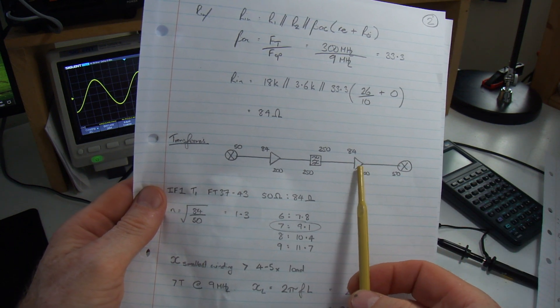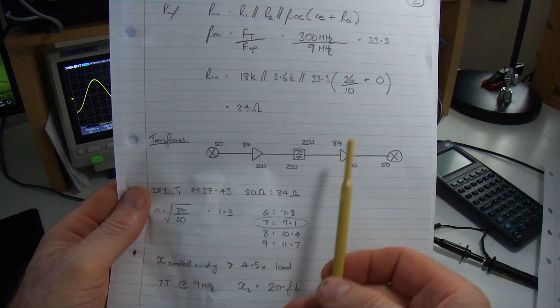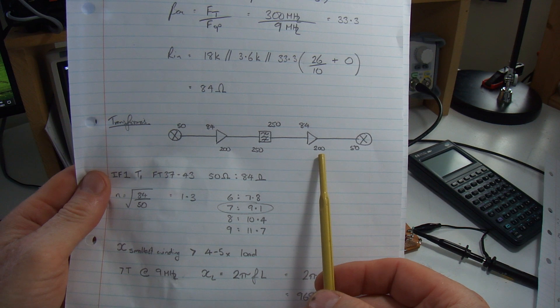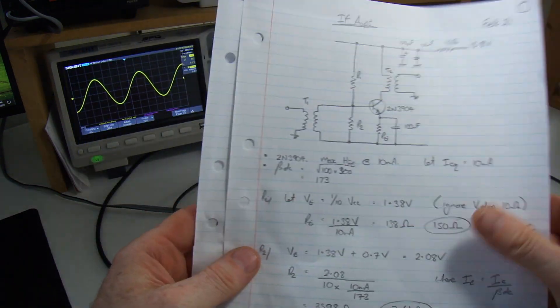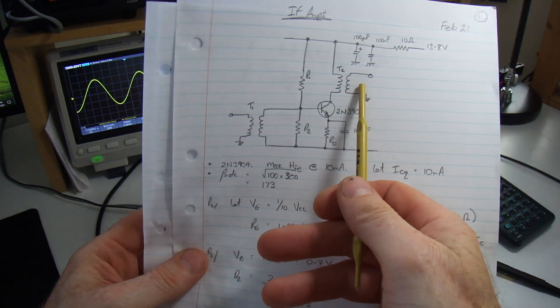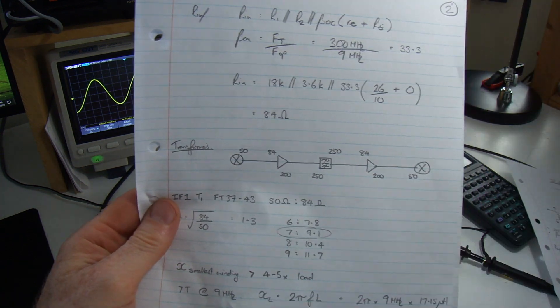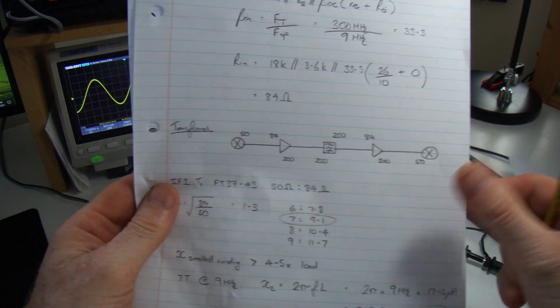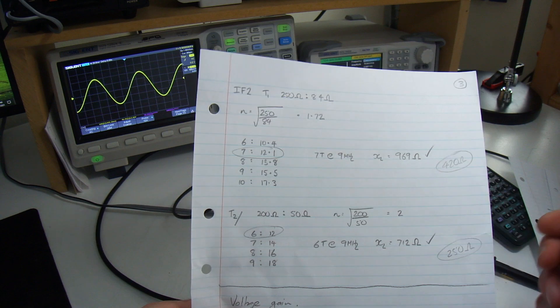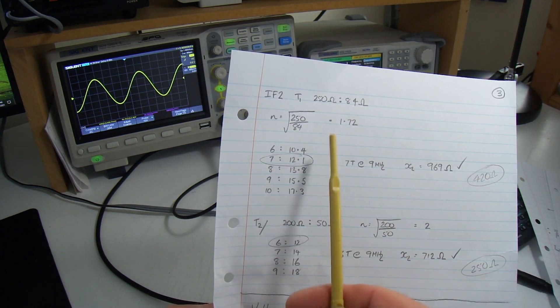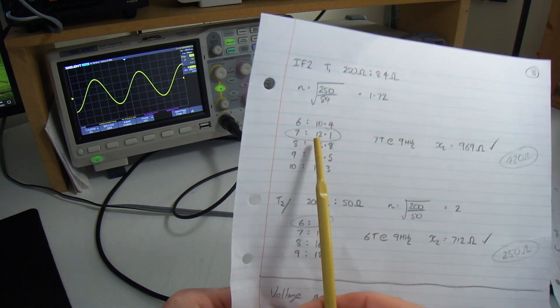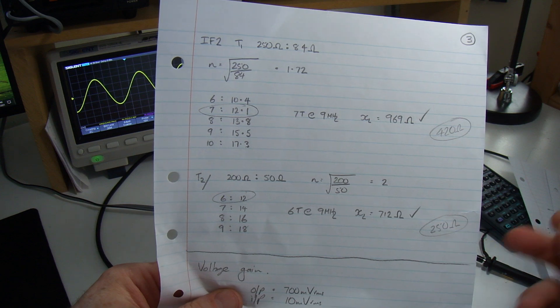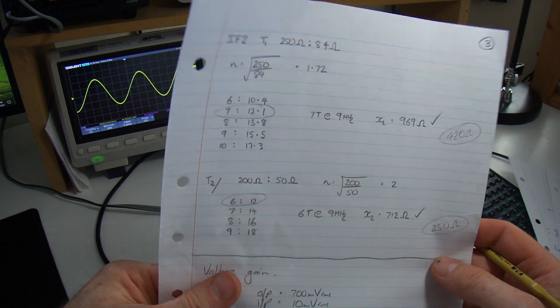Next two is going to be for the second IF amplifier, IF number 2. T1 is going to be matching 250 to 84, and T2 the output is matching 200 to 50. Same sort of scenario. Comes out at for T1 a 7 to 12, and then for T2 is going to be a 6 to 12. Just double checking, big ticks there, I'm greater than what I need to be. So it's all looking good.